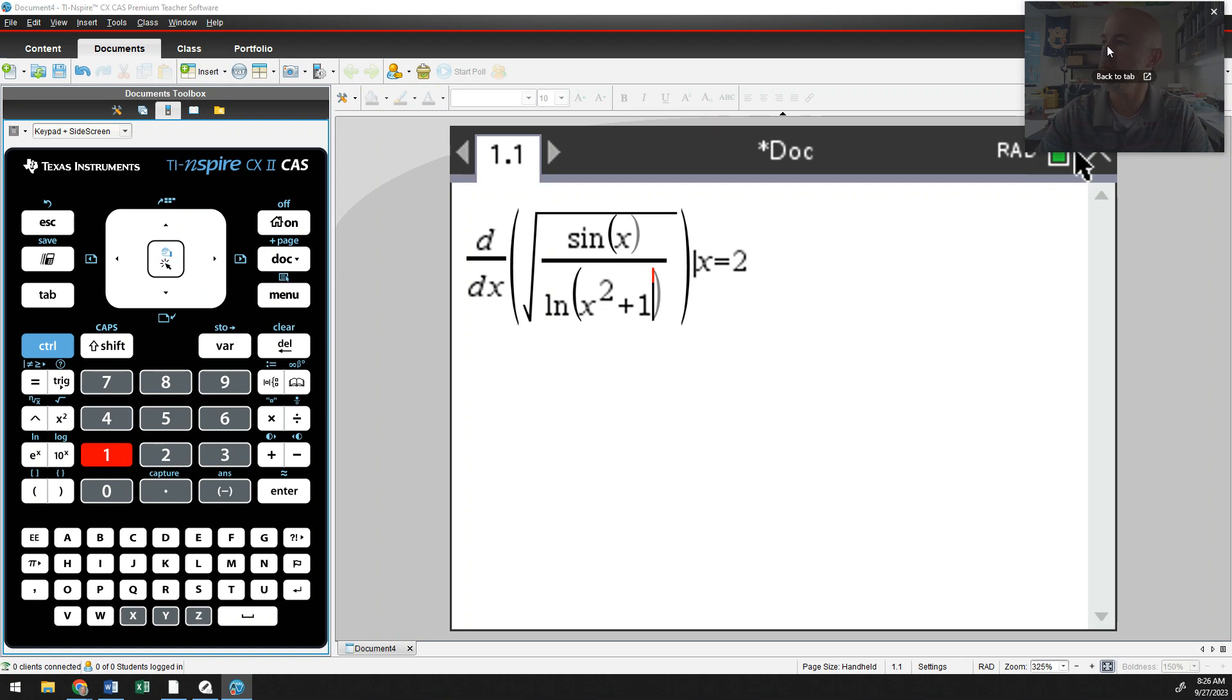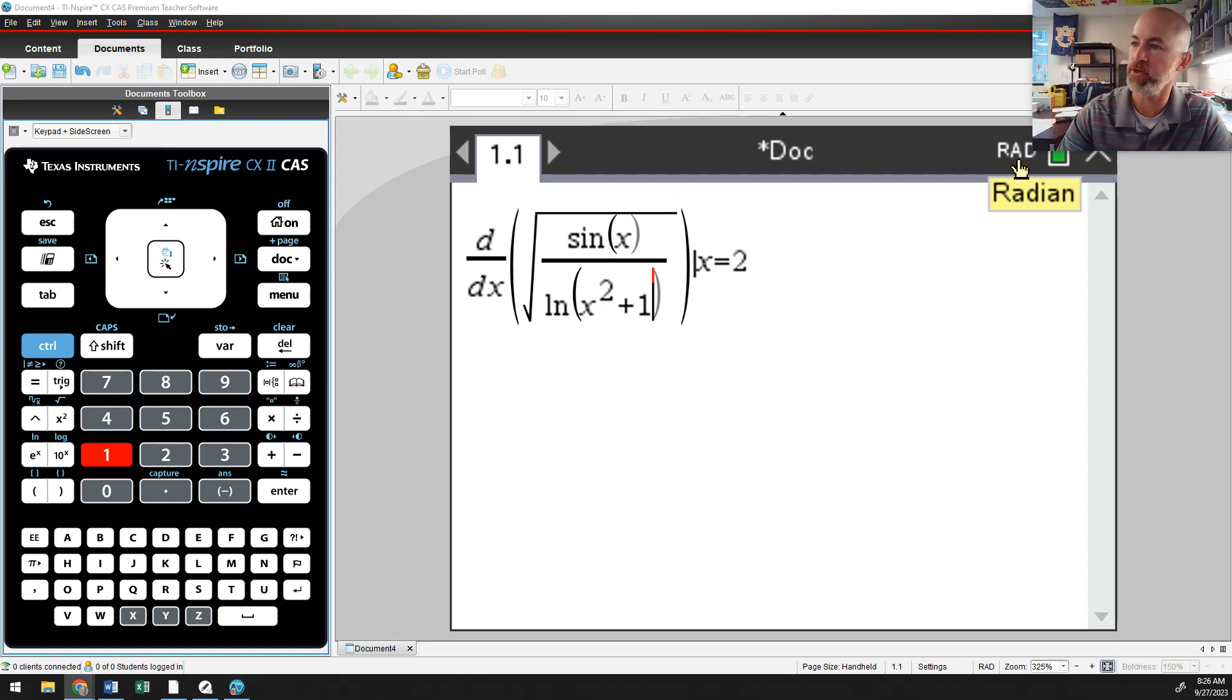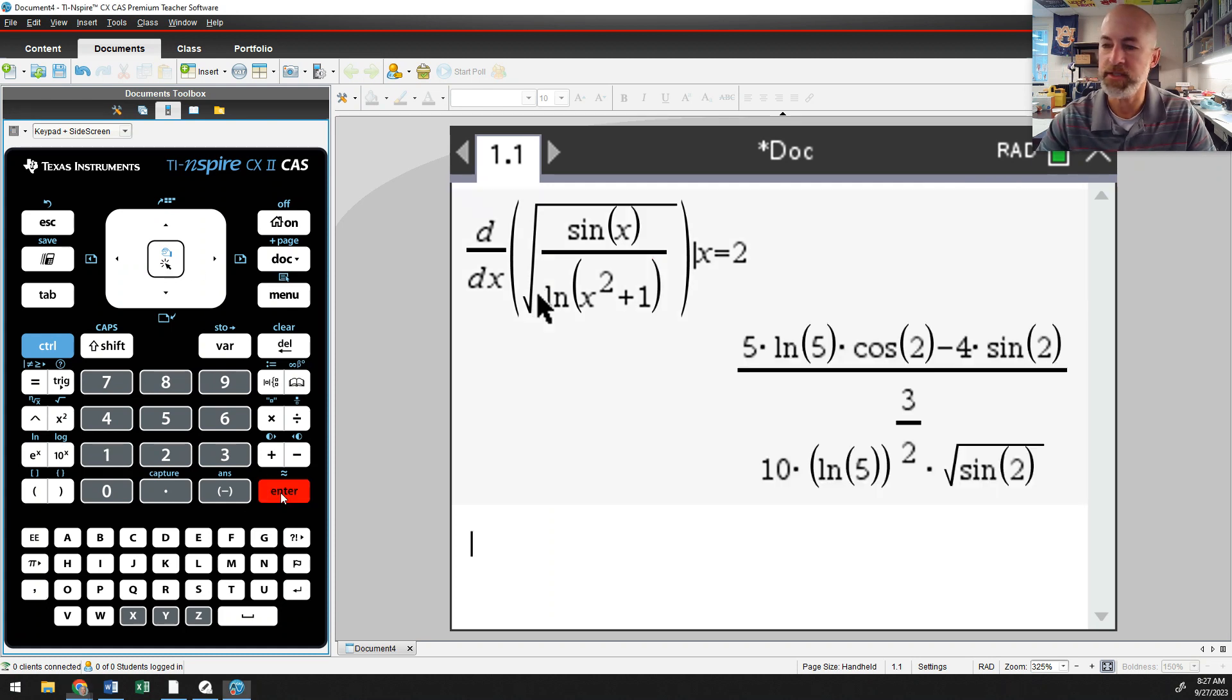And one thing to look out for is to make sure you're in radian mode. So look up next to your battery, make sure you see RAD instead of DEG or something else, because that will affect your answer if you have a trig function. And something else to point out is if I go ahead and hit enter, I get this really ugly version of the answer, which it is correct. You could write that down and get full credit.